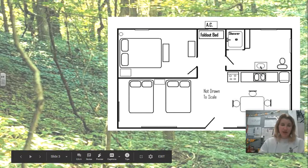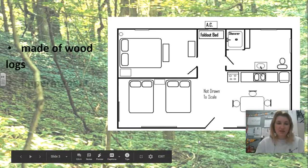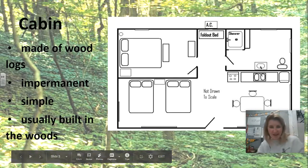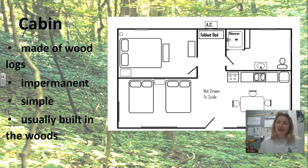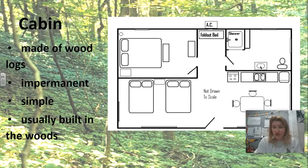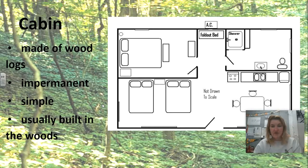I want to talk about some basic houses that actually exist in the United States. You can probably guess this one — maybe made of wood logs, impermanent, simple, usually built in the woods. A cabin. A lot of people have cabins, mostly rich people. Think of like hunting cabins, that kind of thing.